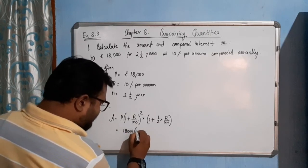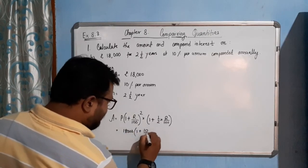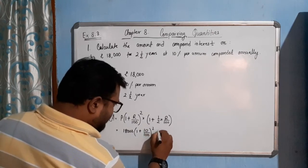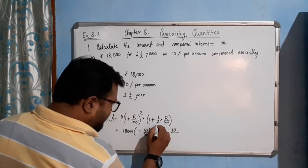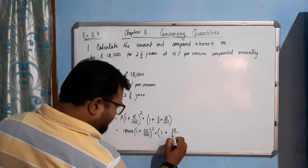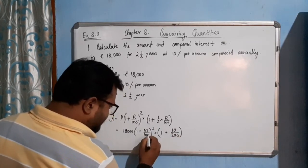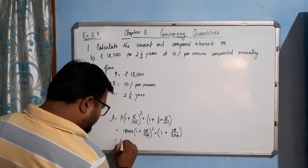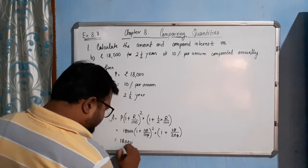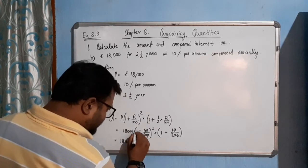Now see, here it is 18,000 times (1 plus 10 by 100) squared, again into (1 plus 10 by 200). Let me simplify. If I cut it down, it will look like 18 triple zero.